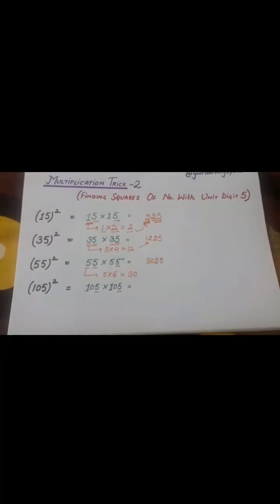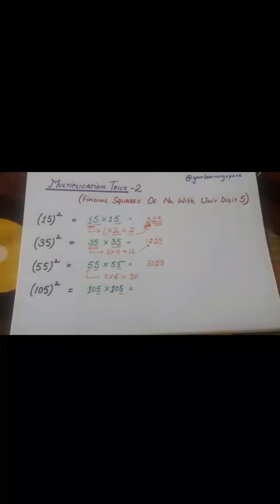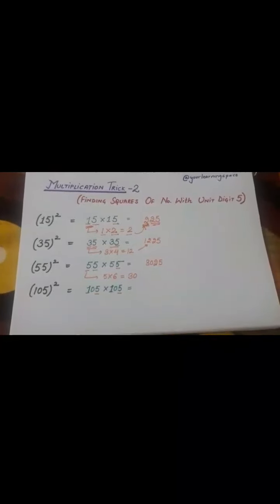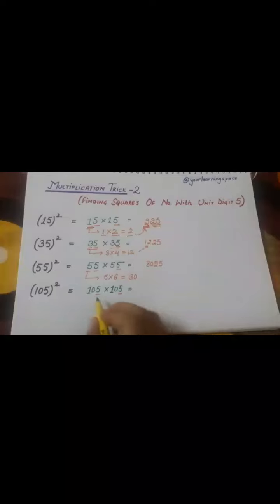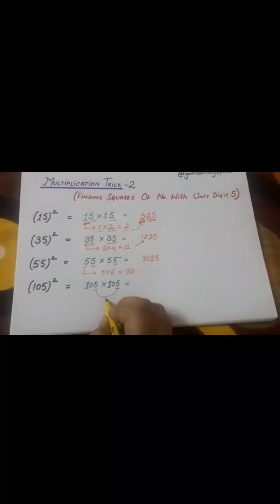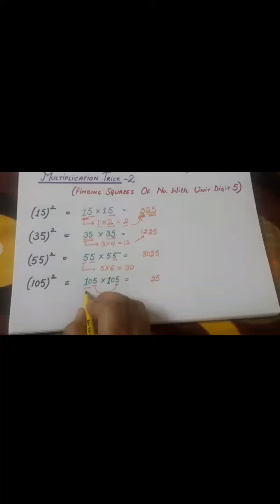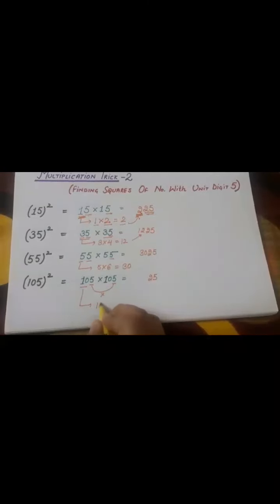Here, I have chosen a three-digit number. We can apply this trick to even four or five digit numbers, so it is applicable there as well. 5 into 5, we are multiplying, so we get 25. Then we have 10. 10 multiplied to its successor is 11, giving us 110. So the answer is 11025.